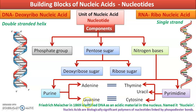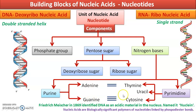Purines are adenine and guanine. Pyrimidines are three types: thymine, uracil, and cytosine. In DNA and RNA, both purines — adenine and guanine — are common. Pyrimidines differ: cytosine is common in both DNA and RNA. The differing pyrimidine is thymine in DNA and uracil in RNA. This is one major difference between DNA and RNA.